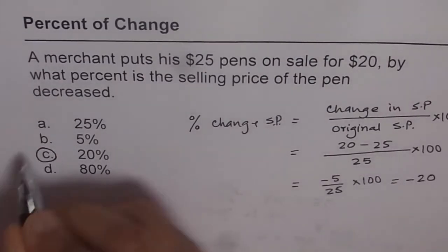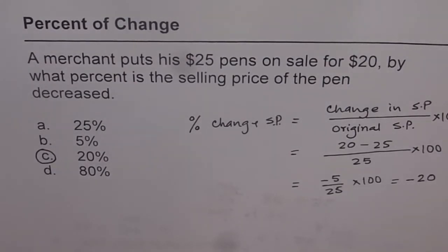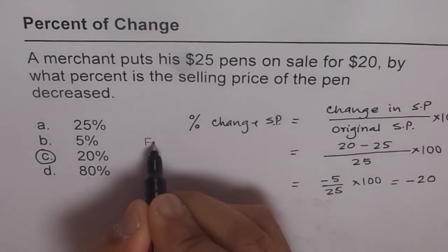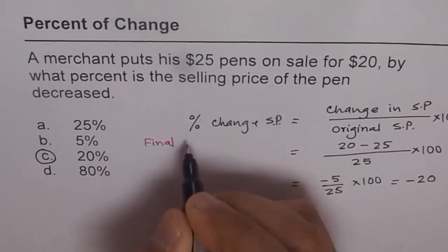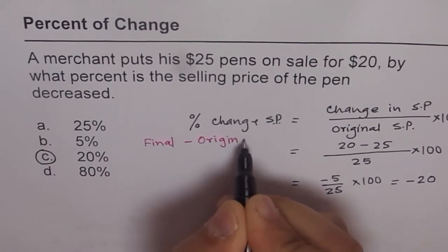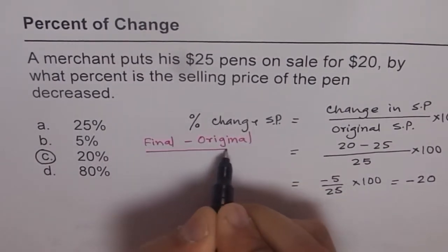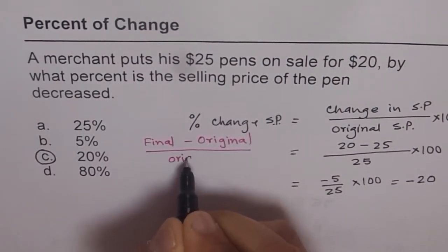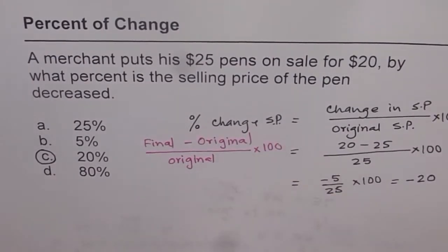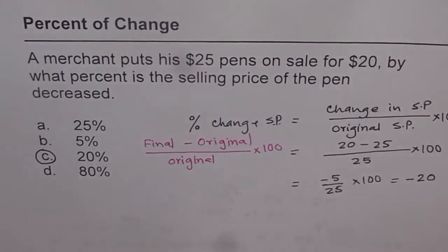So the answer is C. So the formula to remember here is for any percent change, we have to write final minus original over original times 100. So that is the formula to be used for such examples.